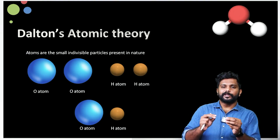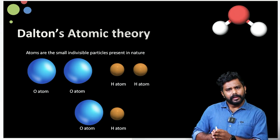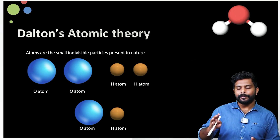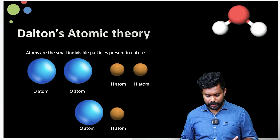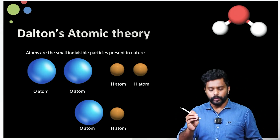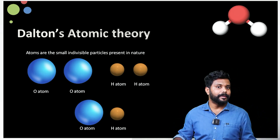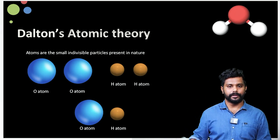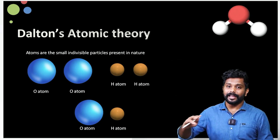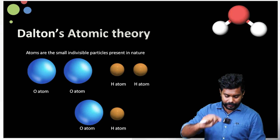The atoms are the small individual particles present in nature. The atoms of the different elements have different masses, and the atoms of the same elements have the same masses. If two atoms are combined, they will form a compound in a simple whole number ratio. This is the theory mentioned by Dalton.